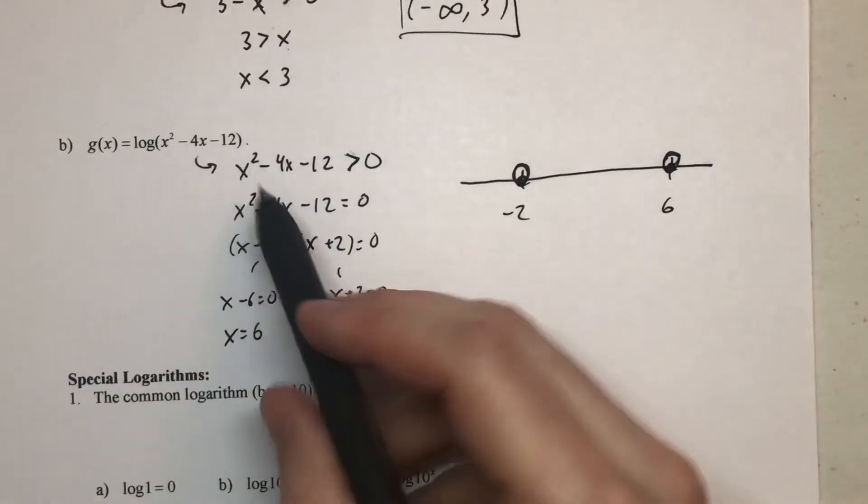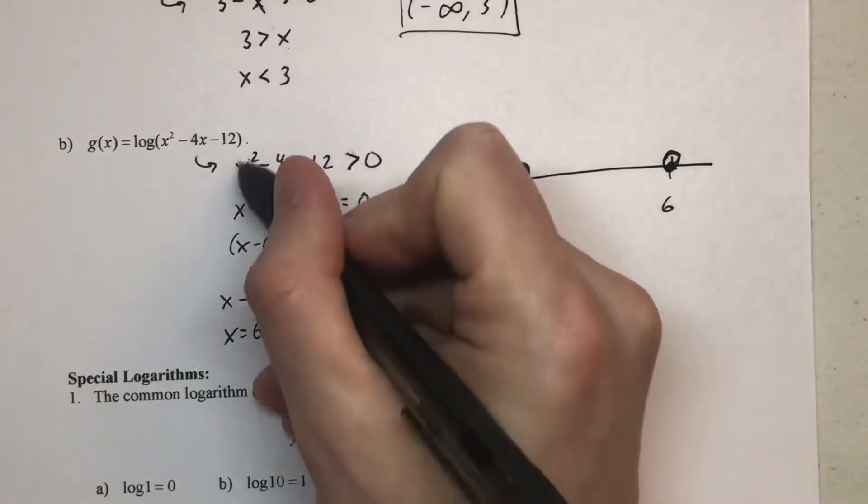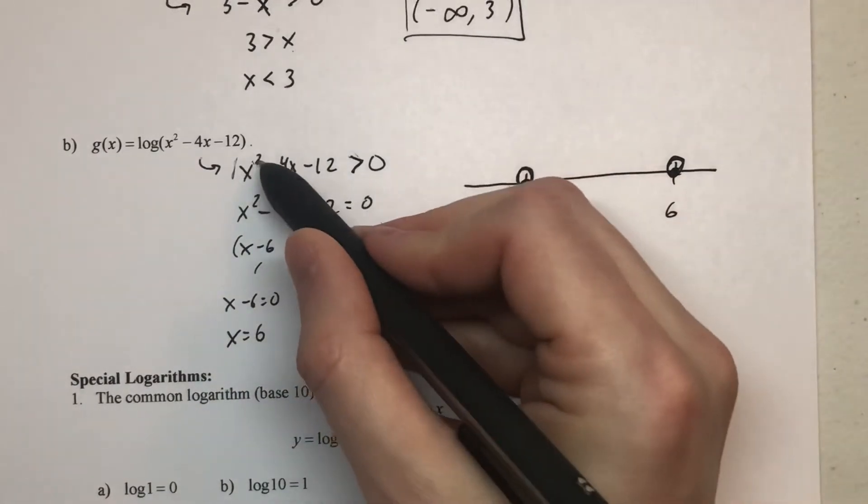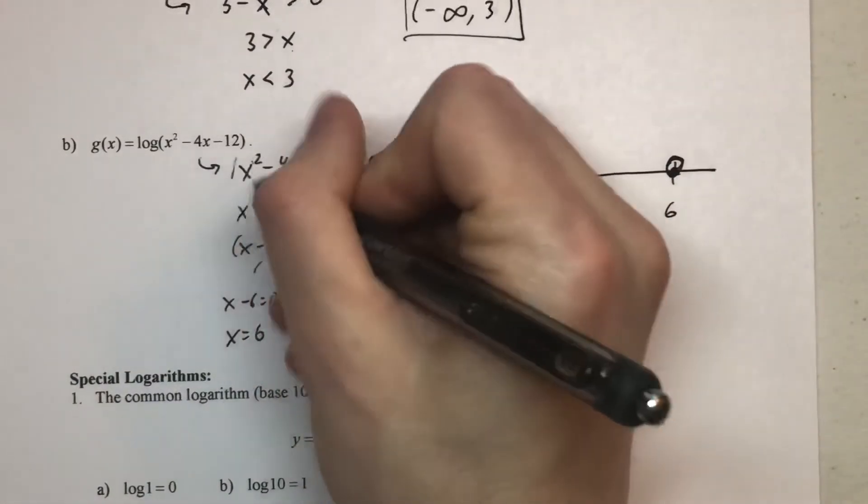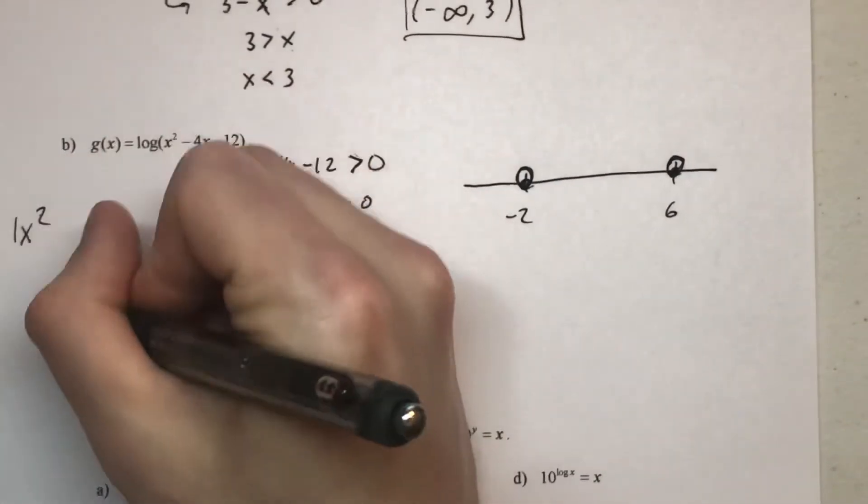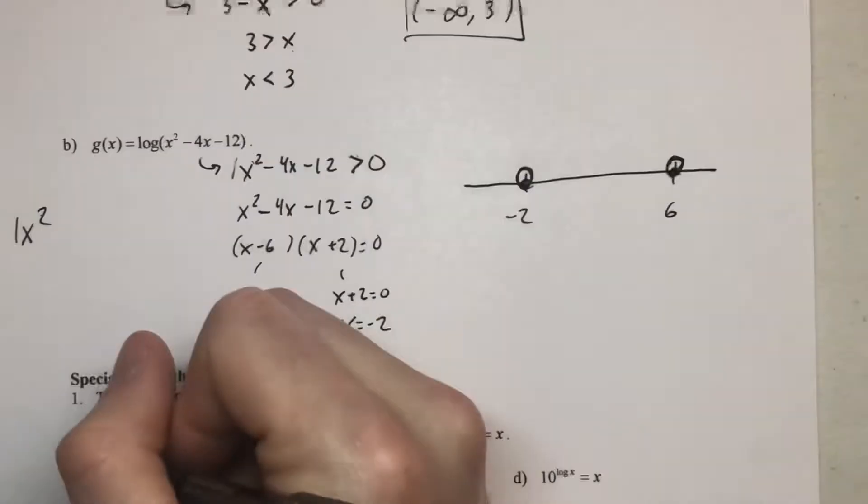Now we can use the end behavior as a review. We've got x squared with a one out front, positive one. So remember, an even lead coefficient—lead term rather—for positive x squared, that's going to be even power, positive coefficient.